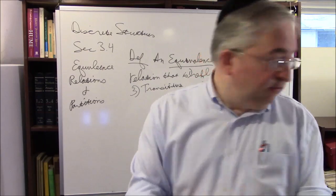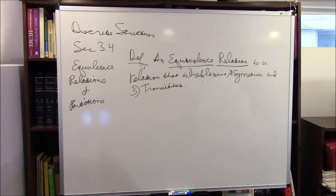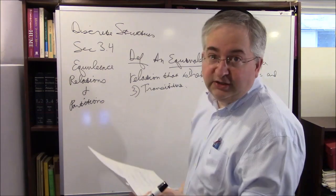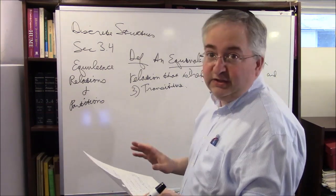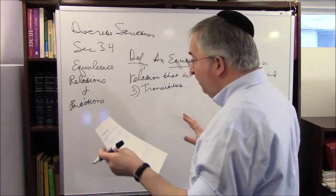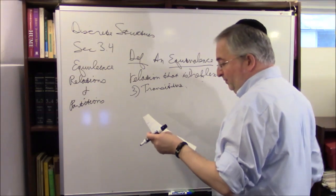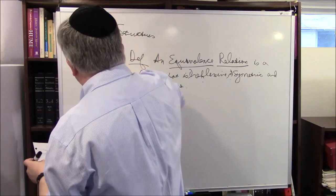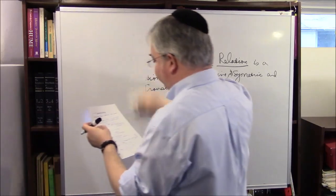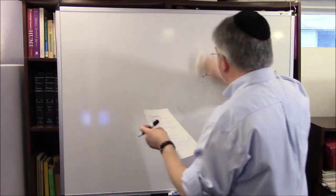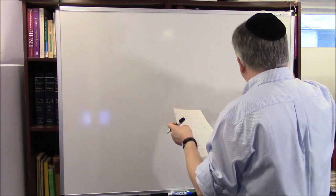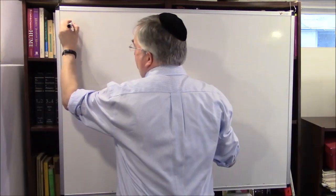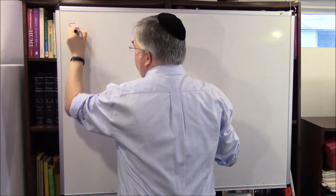Now we go through seven examples. The book does 13 examples, and I don't have any of the same examples as the book, so between us you see a lot of examples. Let's erase some things and share some examples. We start off with non-mathematical examples to get our intuition, and then we do more mathy things.